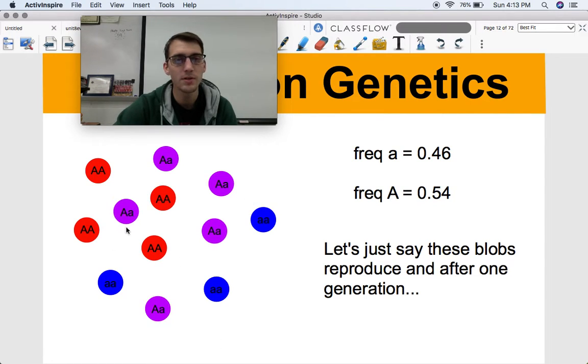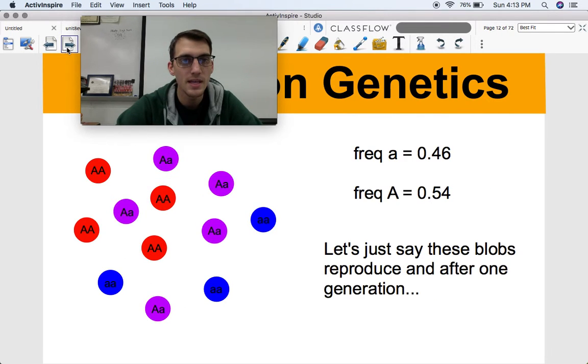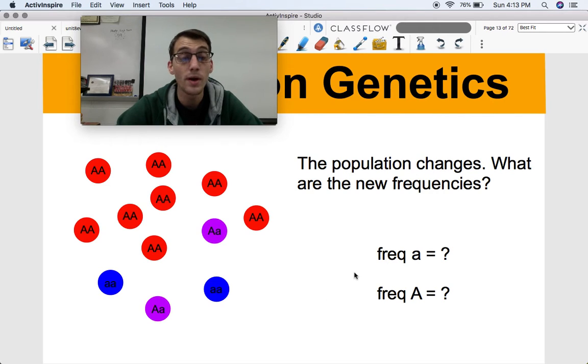So here's these blobs, they're living their lives, and this is one generation, and they're all happy, and they all reproduce with each other. And they're going to produce more blobs for the next generation, and the previous generation dies out. So after one generation of reproduction between these blobs, the population changes, and what are the new frequencies? So check out our new population over here. It has definitely changed if you see the difference between the two. So what I'm going to challenge you to do right now, is to pause the video, try to calculate based on the example that we just went through, what's the frequency of the recessive allele, and what's the frequency of the dominant allele?